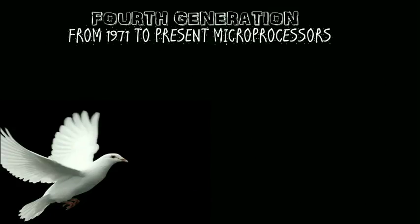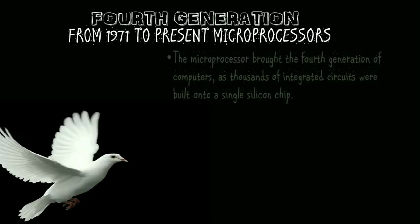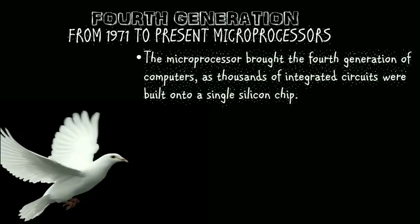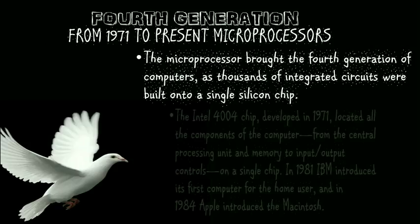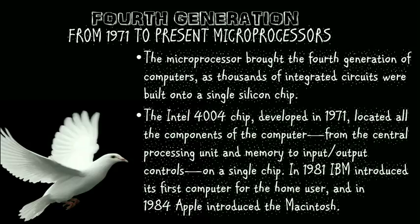The fourth generation spans from 1971 to present. Microprocessors brought the fourth generation of computers as thousands of integrated circuits were built into one single silicon chip. The Intel 4004 chip, developed in 1971, located all the components of a computer — from the central processing unit and memory to input and output controls — on a single chip. In 1981, IBM introduced its first computer for the home user, and in 1984, Apple introduced the Macintosh.